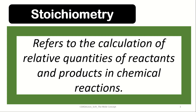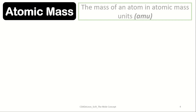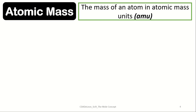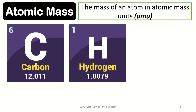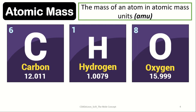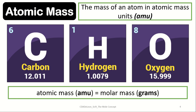Before we proceed, let us first explore the idea of atomic mass. The atomic mass refers to the mass of the atom in atomic mass units, or AMU. In the periodic table, each element has its specific atomic mass. For example, carbon has an atomic mass of 12.011, hydrogen has an atomic mass of 1.008, and oxygen has an atomic mass of 15.99. Note that atomic mass uses the unit AMU, while molar mass uses the unit grams.